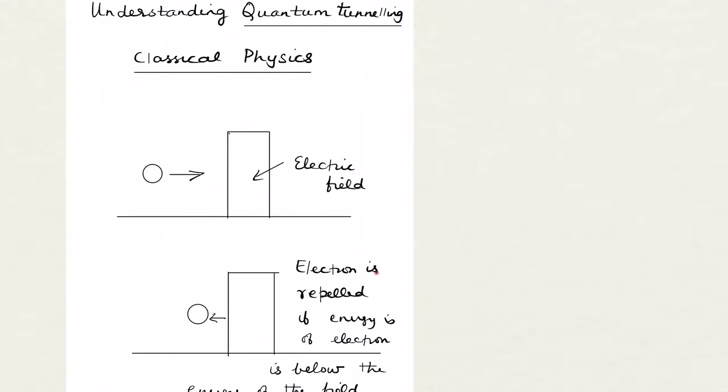This is an electron, and the electron is repelled if the energy of the electron is below the energy of the field. So this is what happens in classical physics. If the electron does not have sufficient energy, it rebounds back and cannot penetrate the barrier.